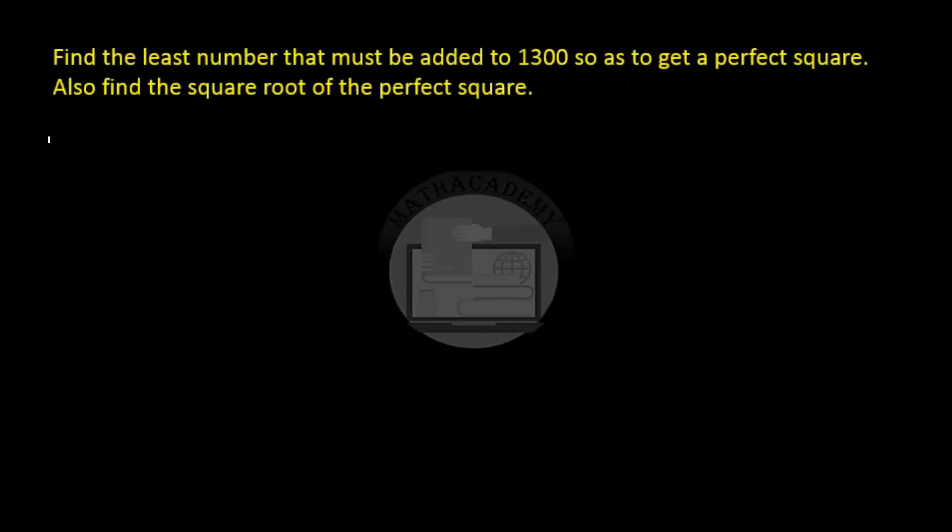Let's see this through an example. Find the least number that must be added to 1300 so as to get a perfect square. We're sure that 1300 is not a perfect square number and we need to add a least number to 1300 so that the resultant number is a perfect square number.